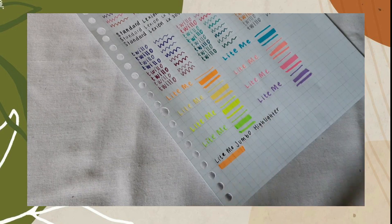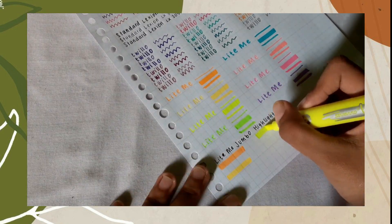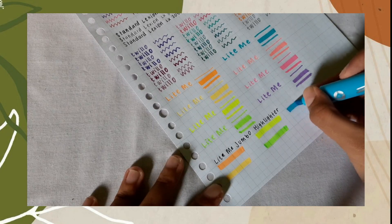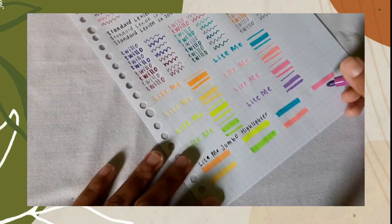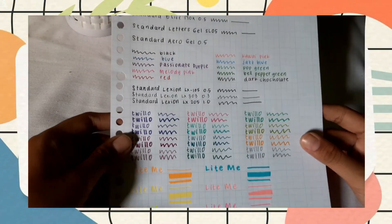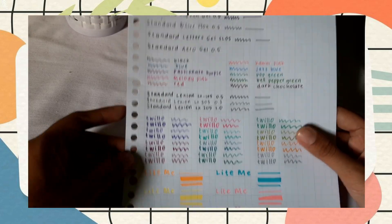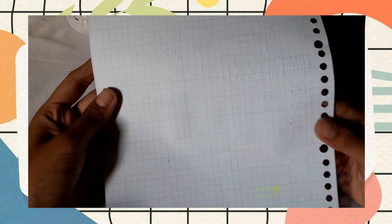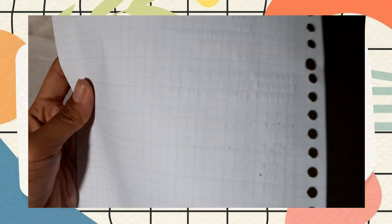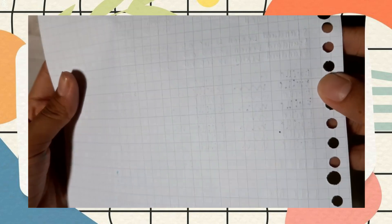Jadi karena ini warnanya sama kayak Lite Me Dual Tip Highlighter, jadi warnanya neon. Jadi ini adalah hasil swatch dari semua produk yang aku dapet dari Standard Pen. Dan yang tembus cuma highlighter-nya doang di ujung-ujungnya doang. Terus yang highlighter, Lite Me Highlighter sama Lite Me Jumbo juga cuma di pinggir-pinggirnya doang.